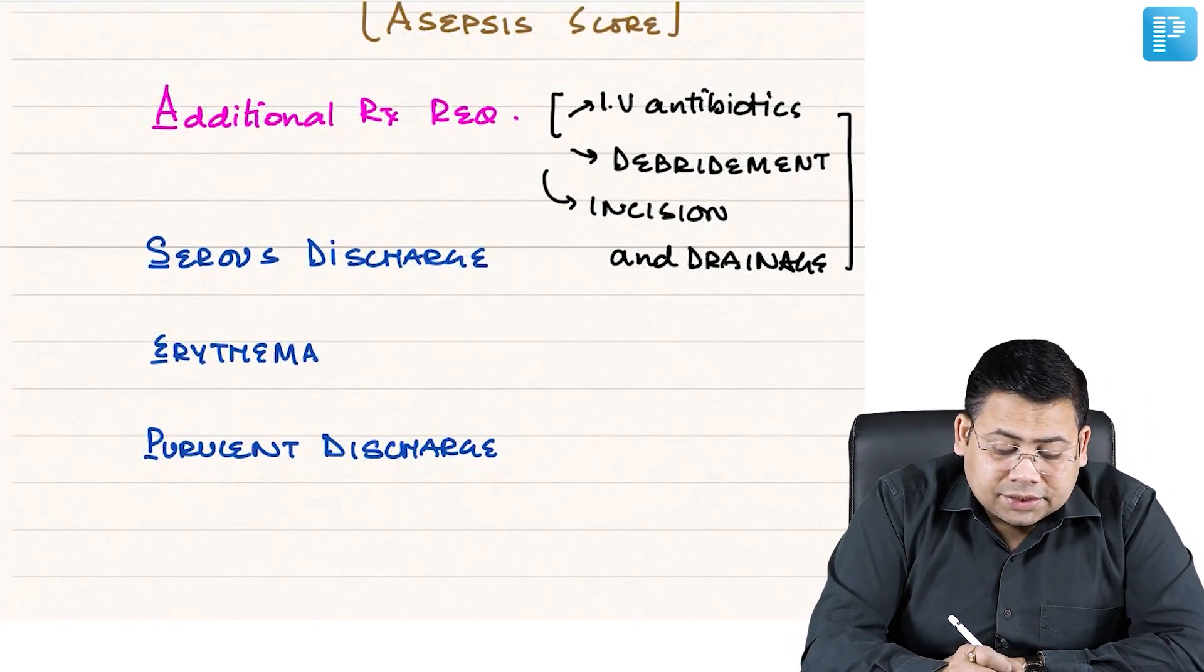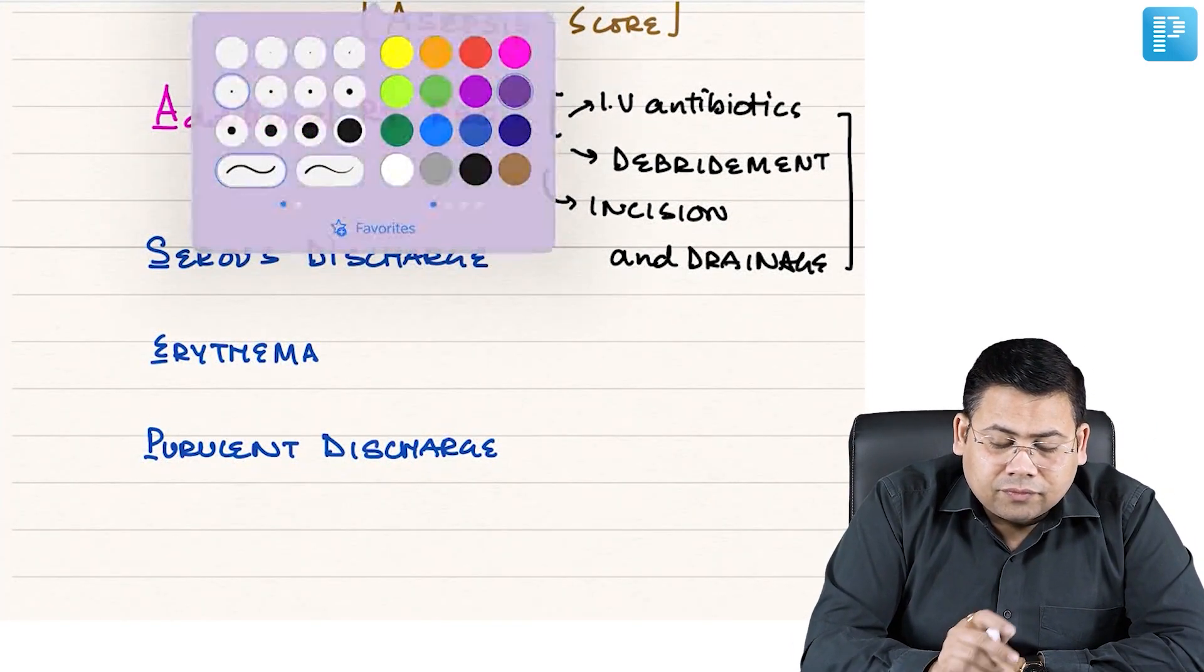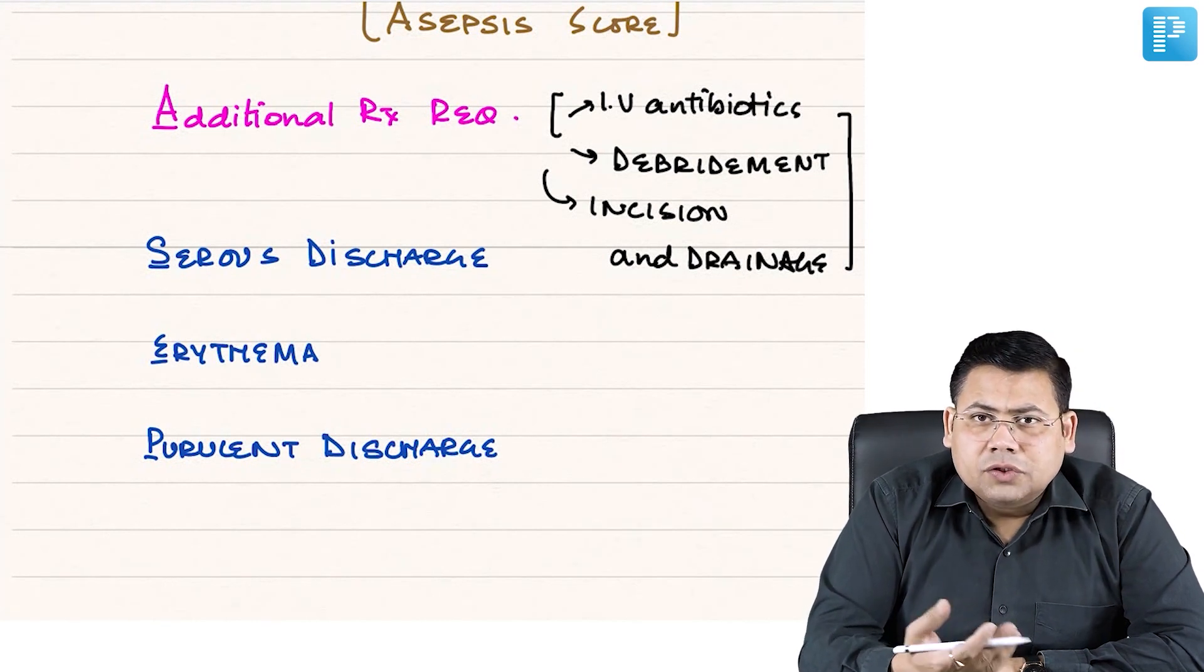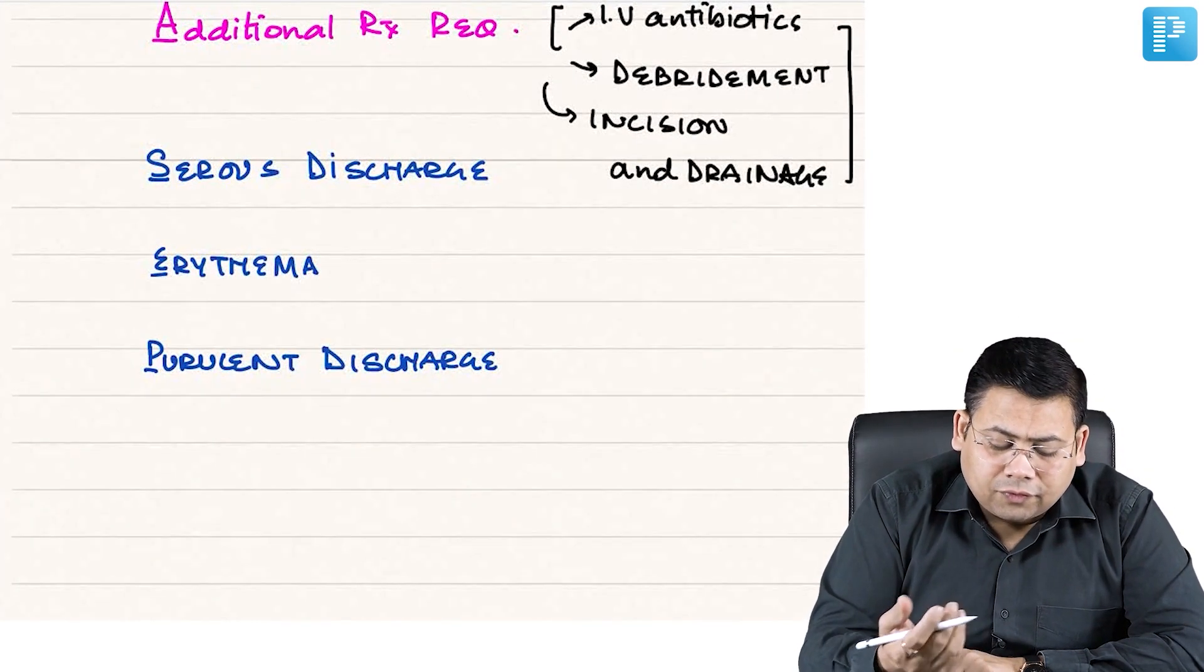The first point that is additional treatment required, you grade from 1 to 10. Remaining, you grade from 0 to 5 or 1 to 5.